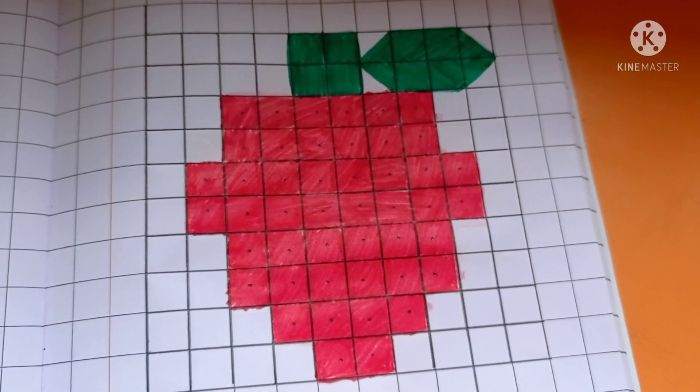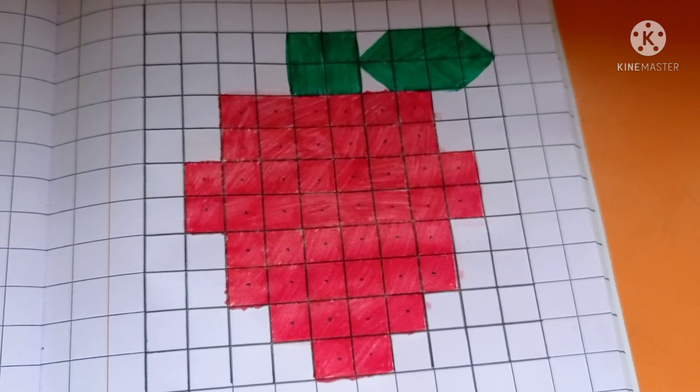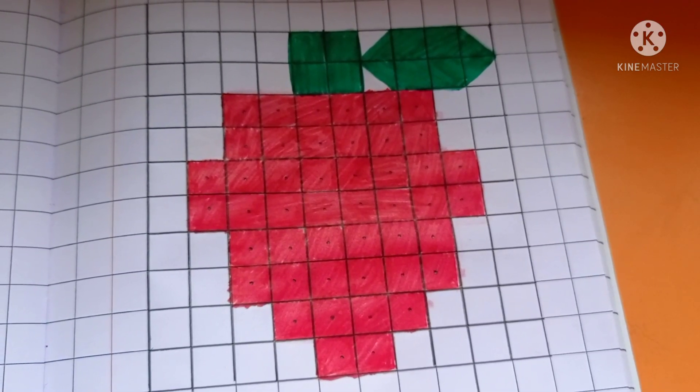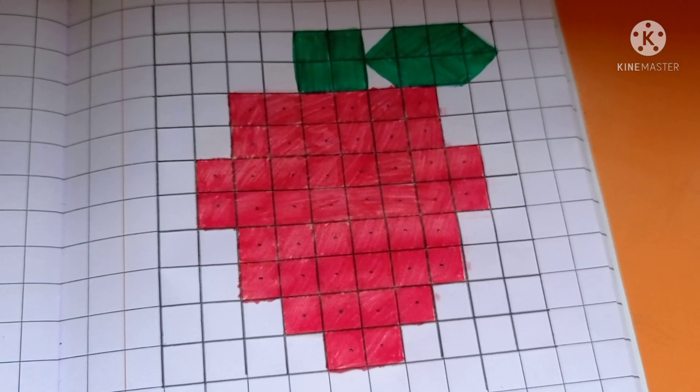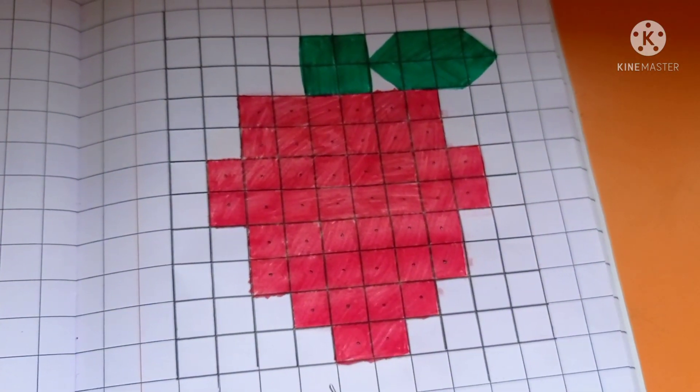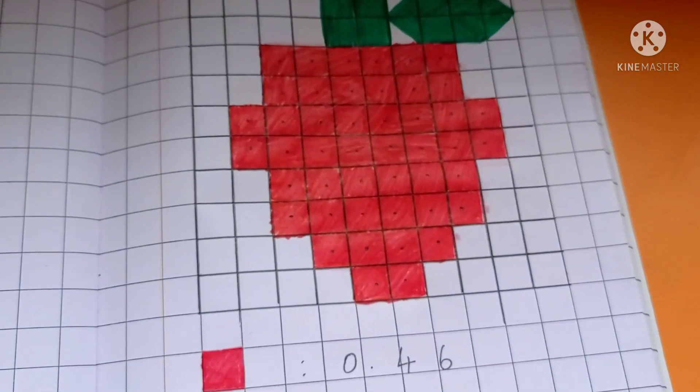Next operation multiplication. Represent two different colors in a decimal point. Number of red squares are 46.